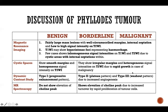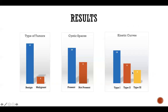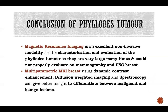Regarding the results of my study: out of 20 cases, 17 are of benign type and 3 are of malignant type. Ten cases show cystic spaces; the remaining do not. Regarding kinetic curves, 10 are of Type 1, 6 are of Type 2, and 4 are of Type 3.